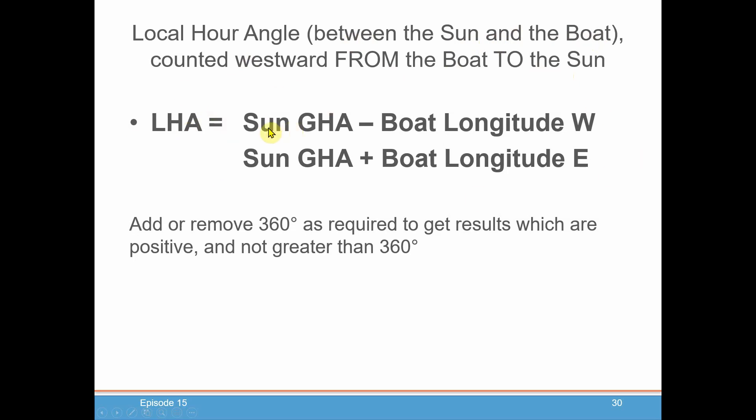LHA is the sun's GHA minus a boat west longitude or sun GHA plus a boat longitude east. And again, you're going to add or remove 360 degrees as required to make sure the results are positive and not greater than 360 degrees.